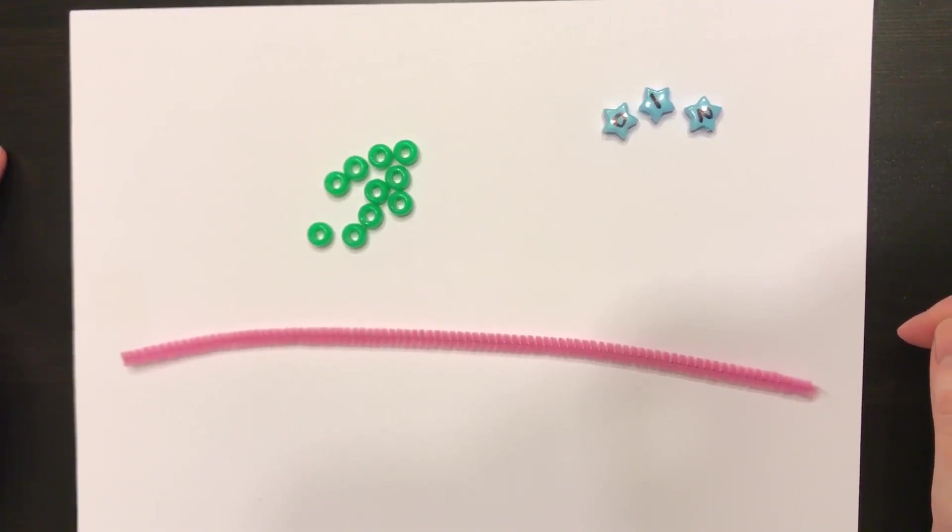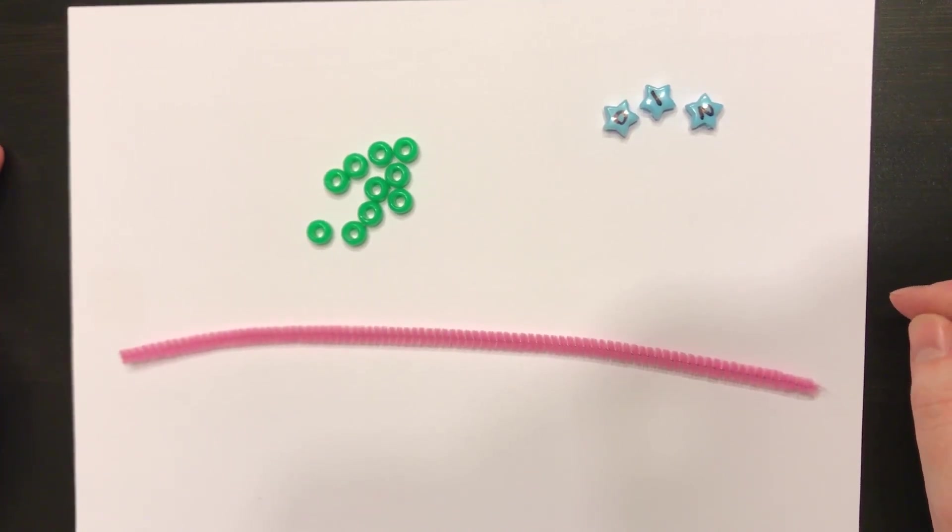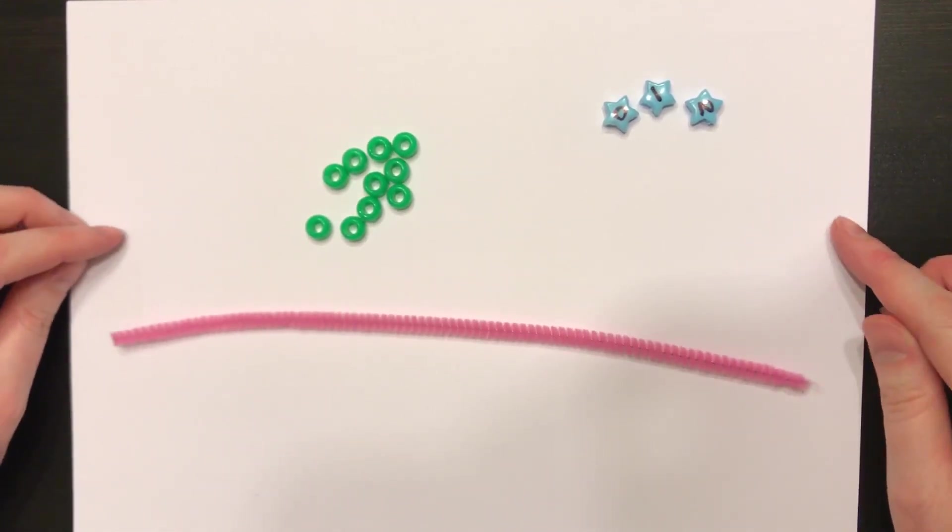Now that you've seen how to make fractions on a number line, let's give it some practice. So we're going to practice making fractions on number lines today using a pipe cleaner and two different types of beads.